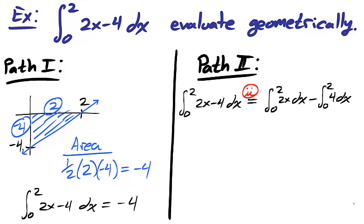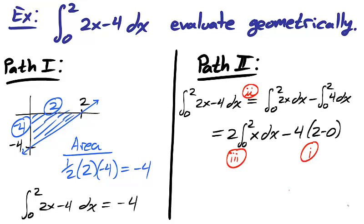Alternatively, in our second path, we can break apart the integral using subtraction, our second integral property. We can then use our third property to pull the constant 2 from the first integral. And we can use our first property, because 4 is constant, to solve the integral. We still need a geometrical interpretation to solve the integral for x.